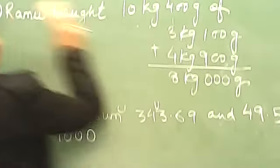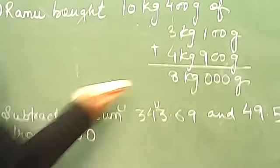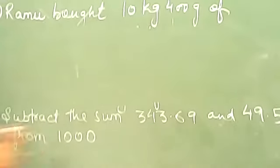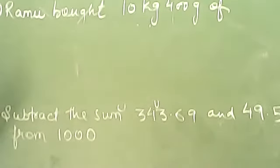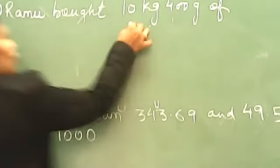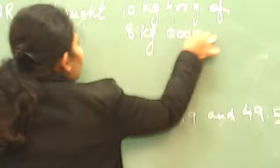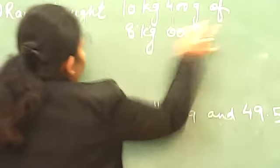Now the question is, how much were onions? So 8 kg 1000 grams. You will just simply subtract from 10 kg 400 grams. So you will have here 8 kg 000. You can write it down or if you want to leave it, it's fine.